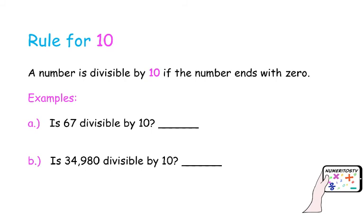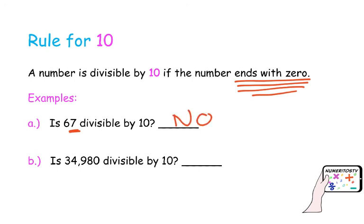Rule of 10. The rule of 10 is also an easy one. A number is divisible by 10 if the number ends with 0. Is 67 divisible by 10? The last digit, 7, is not 0, so 67 will not be divisible by 10. What about 34,980? Even though it's a big number, just by checking the ending — which is 0 — that number will be divisible by 10 for sure.